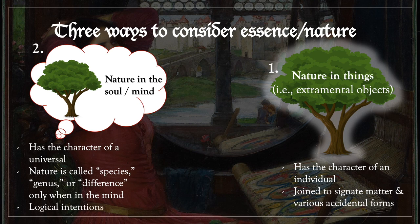Thus, species, genus, and difference are called logical intentions, or logical concepts. That's because they are concepts that do not apply to the nature outside the mind, but only to the nature within the mind. We don't say that this tree outside the mind is a species — rather, it's an individual. But we can say that 'tree' in the mind is a species because it's predicable of multiple individuals.